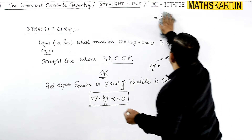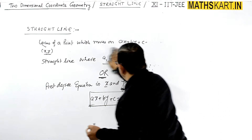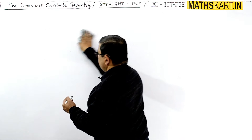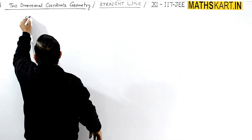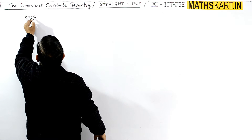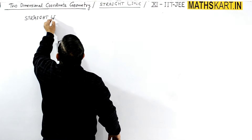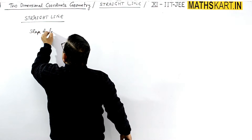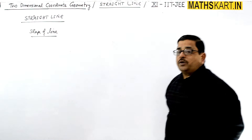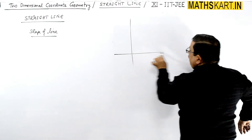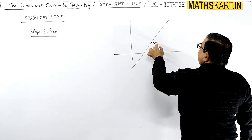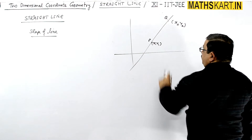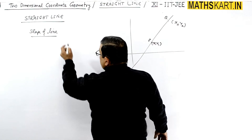Now we move on to the slope of a line. Let's say there are two points given: x1, y1 and x2, y2 — these two points are P and Q. We want the slope of the line.